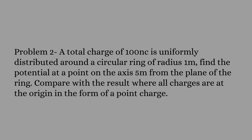A total charge of 100 nanocoulombs is uniformly distributed around a circular ring of radius 1 meter. Find the potential at a point on its central axis, at 5 meters from the plane of the ring. Compare with the result where all the charges are at the origin in the form of a point charge.